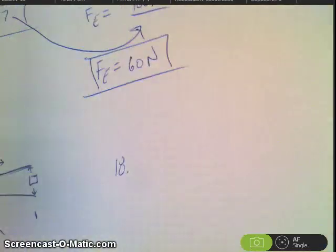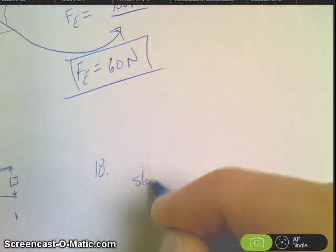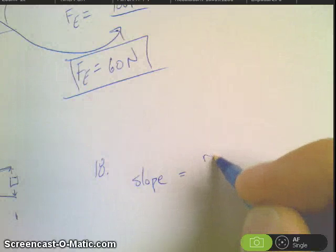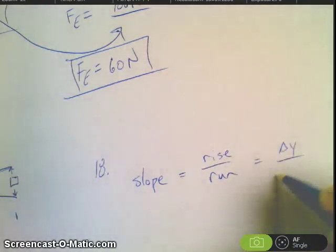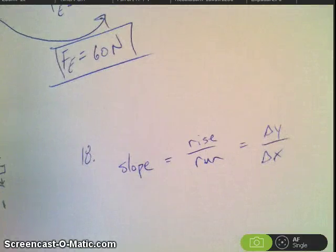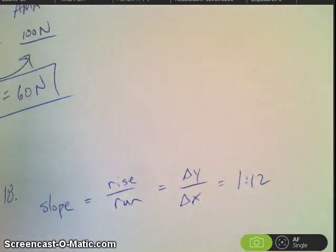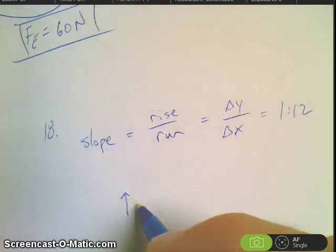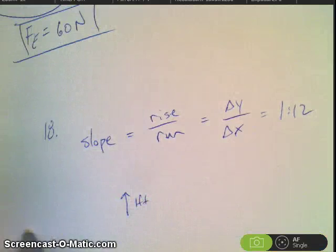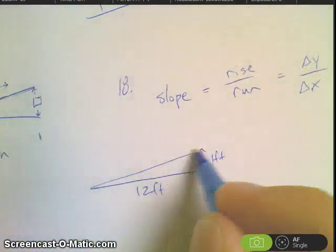Eighteen, it gives us some things. It says the slope has to be one to twelve. And if you remember slope is equal to, most people know it as rise over run. I like to say it's the change in y over the change in x. So if that value is one to twelve, that means that for every one foot that we go up, we had to come twelve feet for that.